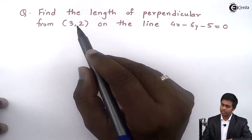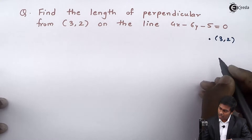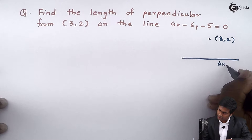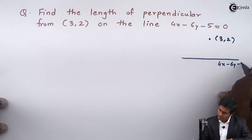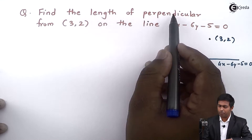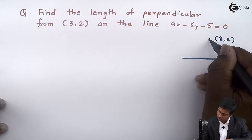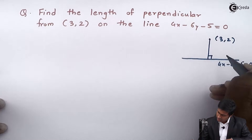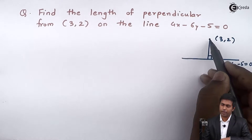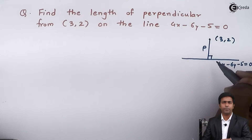So let's say this is a point which is (3, 2) and this is the given line which is 4x minus 6y minus 5 equal to 0. We have to find out the length of perpendicular which is drawn from this point — a perpendicular drawn from point (3, 2). So let's say this length is p, and we have to find out the value of p.